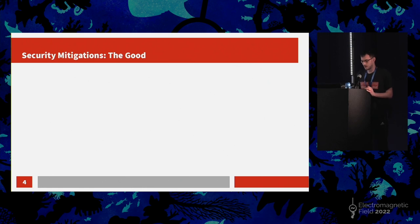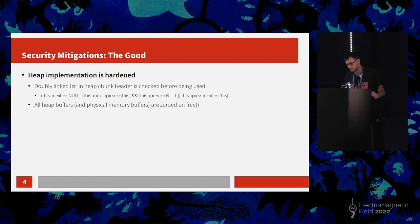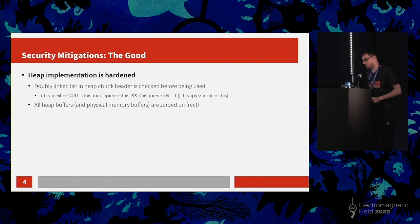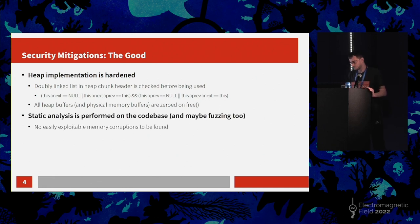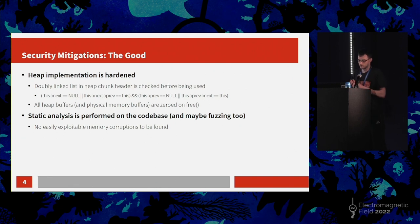However, there are some things that have been done well. For example, the heap implementation is actually hardened, and all heap buffers are zeroed when they're freed — which is good, though bad if you're trying to exploit something. If you do get a heap overflow, there's no panic; it just says this is corrupt and allocates some more physical memory. Static analysis also gets performed on the code base, and probably fuzzing as well. There's no easy exploitable low-hanging fruit stack overflows, which is good because if there was one, you'd be exploiting it like it's the 90s.